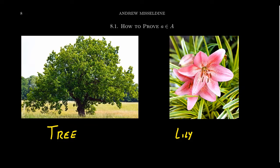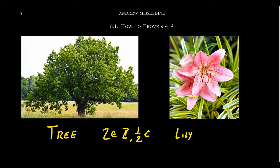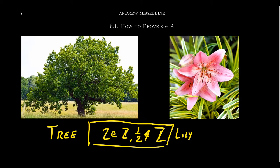We often have to decide whether a mathematical object belongs to a specific set or not. For example, we have to decide that the number two belongs to the set of integers, but we can also decide that one half does not. When I say 'decide,' I mean we made a determination — it's not like our choice. There is a definition of the set of integers, and we have to determine whether two matches that property. Yes, it does, so it belongs. Does one half satisfy that property? No, so it doesn't belong.